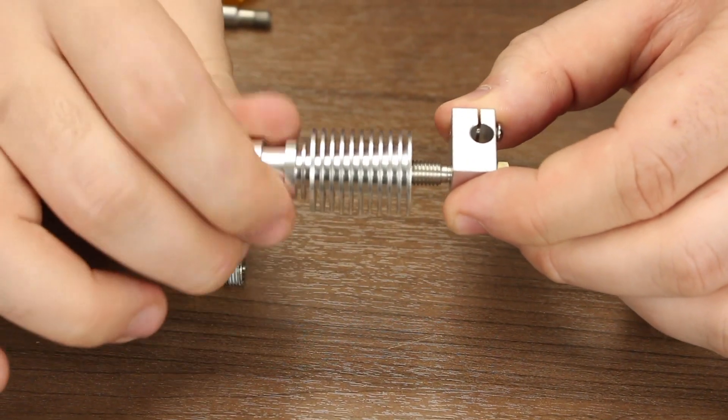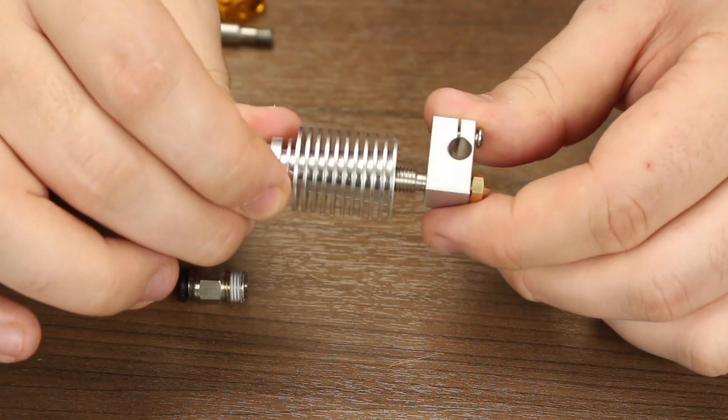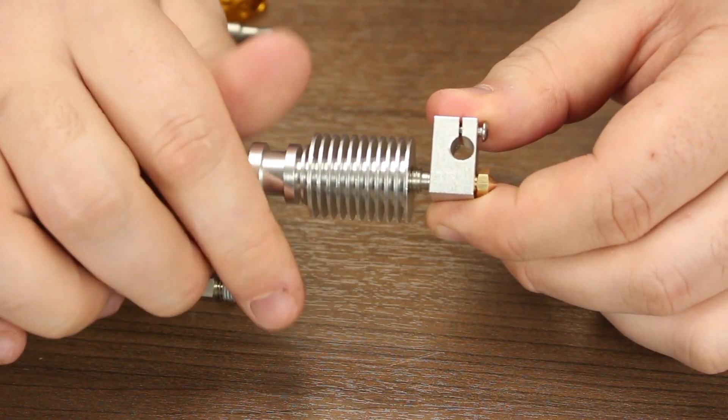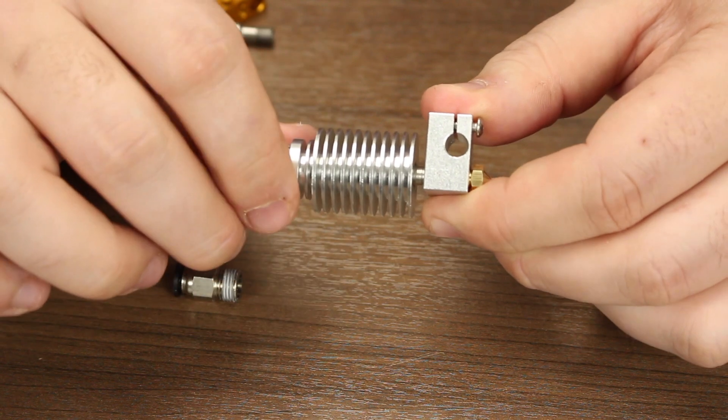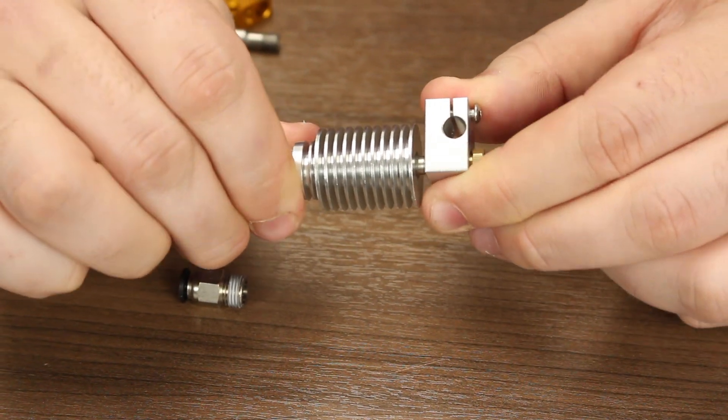Start by screwing on the heat sink until you feel it physically stop. There's no need to over tighten this because if you do, you'll never get it out.